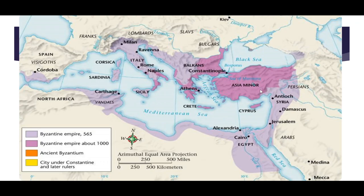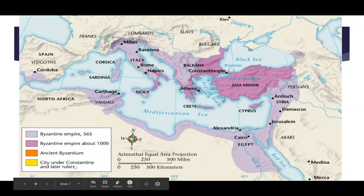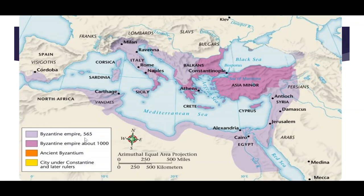This map shows the emergence of the Byzantine Empire, its growth, and then its decline. You can see the city under Constantine and later rulers, the ancient Byzantine territory, and the Byzantine Empire at about 1000 AD versus 560 AD. They slowly lost control at a much slower pace than Western Rome. The east won't clearly fall until the 15th century, slowly losing its power to the Turks and various European groups.